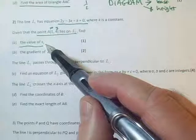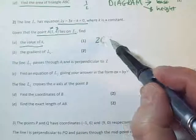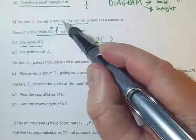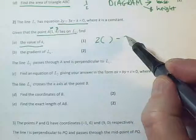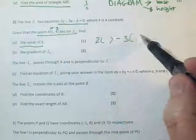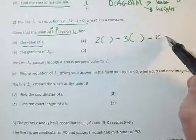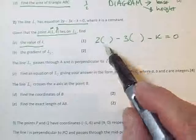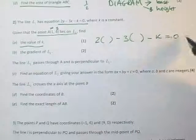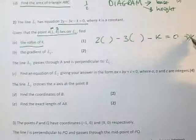If I know this lies on L, then X and Y must work in this equation. To find K, I do 2 times Y minus 3 times X minus K equals 0. If I substitute the numbers in here, I'll be able to get what K is by solving that equation.